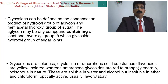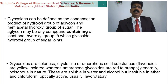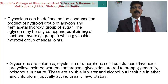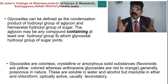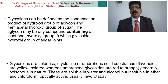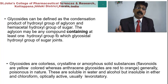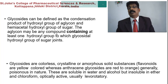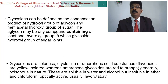Sugars are hemiacetal and occur as oxide rings. Glycosides can be defined as a condensation product of the hydroxyl group of an aglycon and the hemiacetal hydroxyl group of a sugar. The aglycon may be any compound containing at least one hydroxyl group to which the glycosidal hydroxyl group of the sugar joins. Glycosides are colorless crystalline or amorphous solid substances.